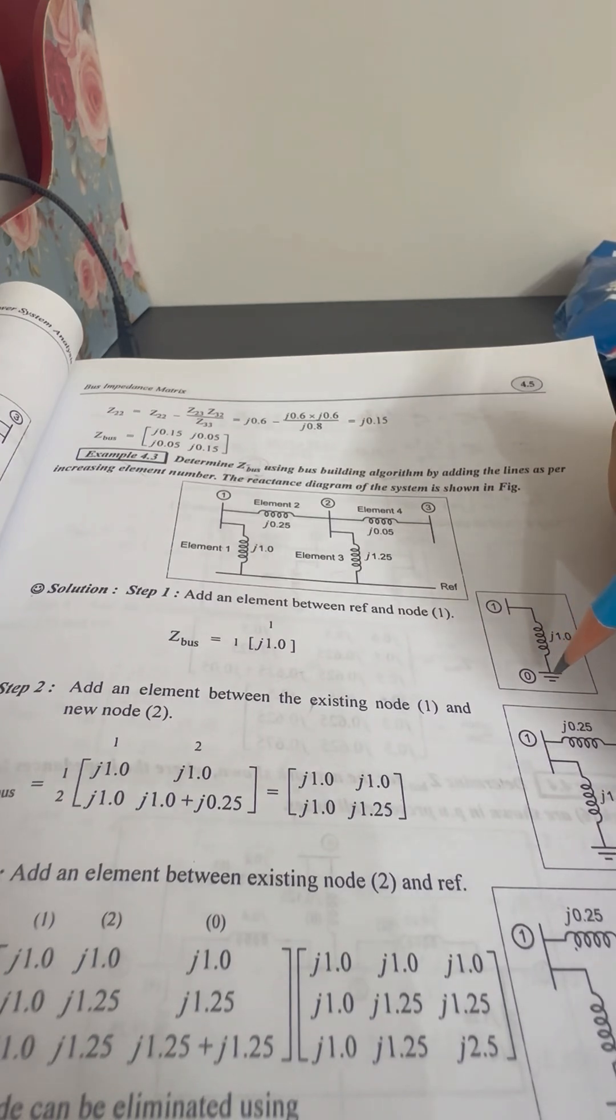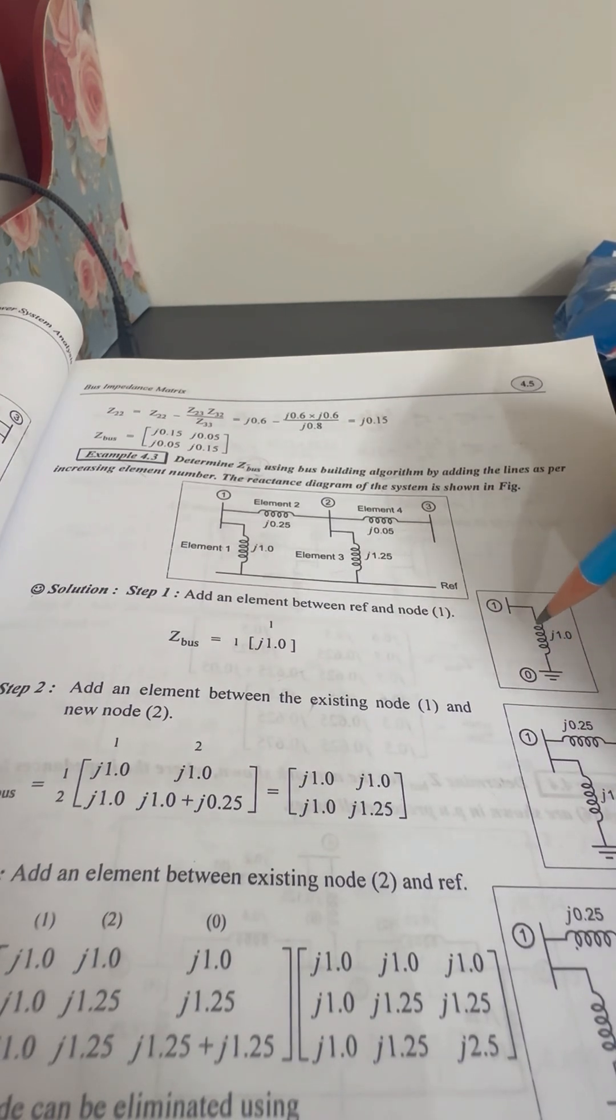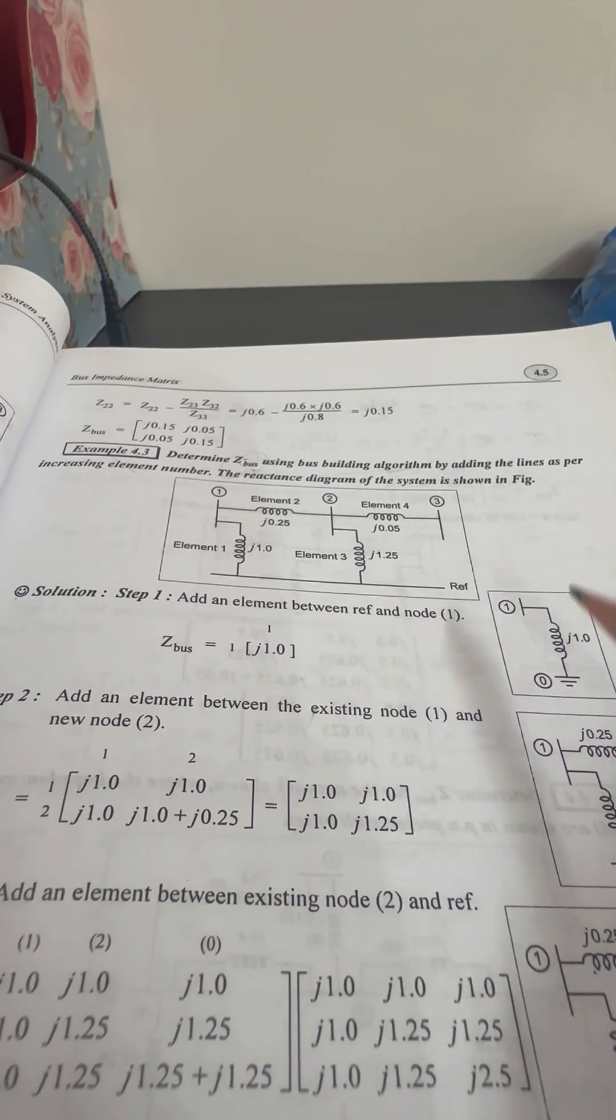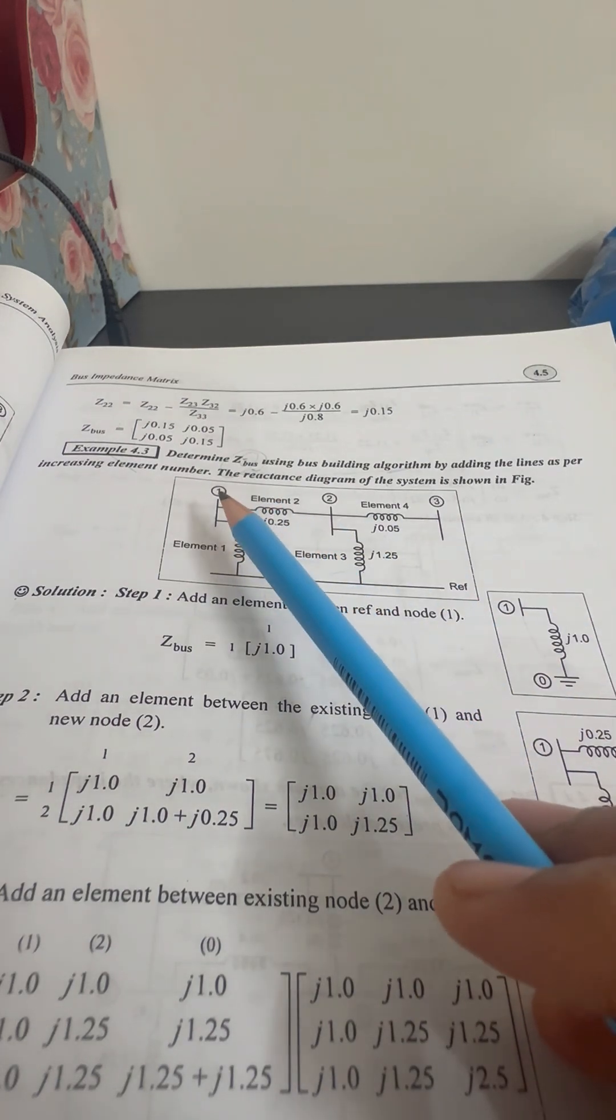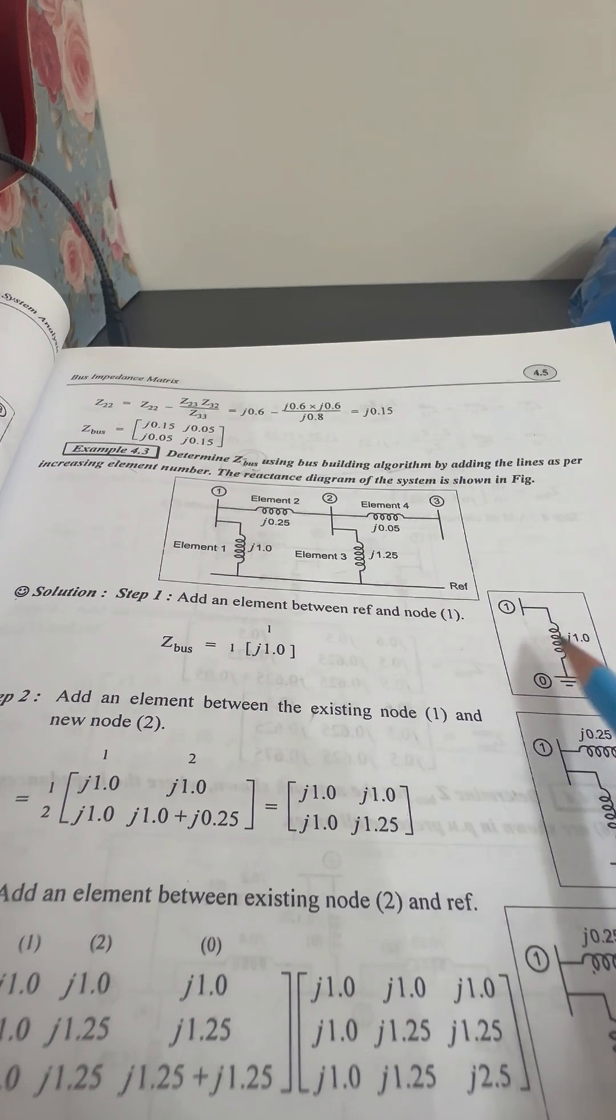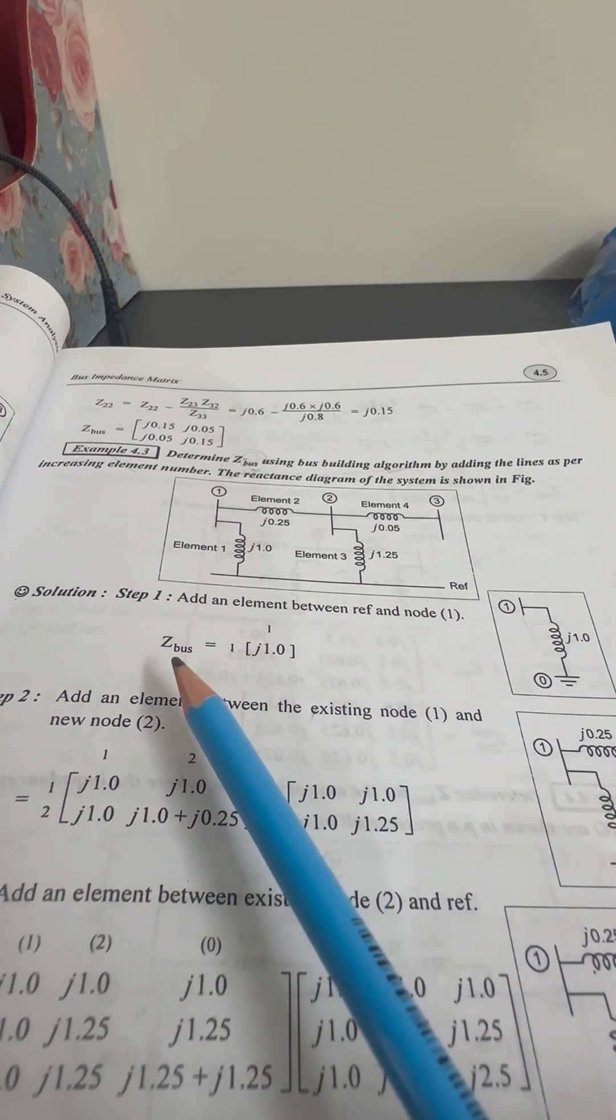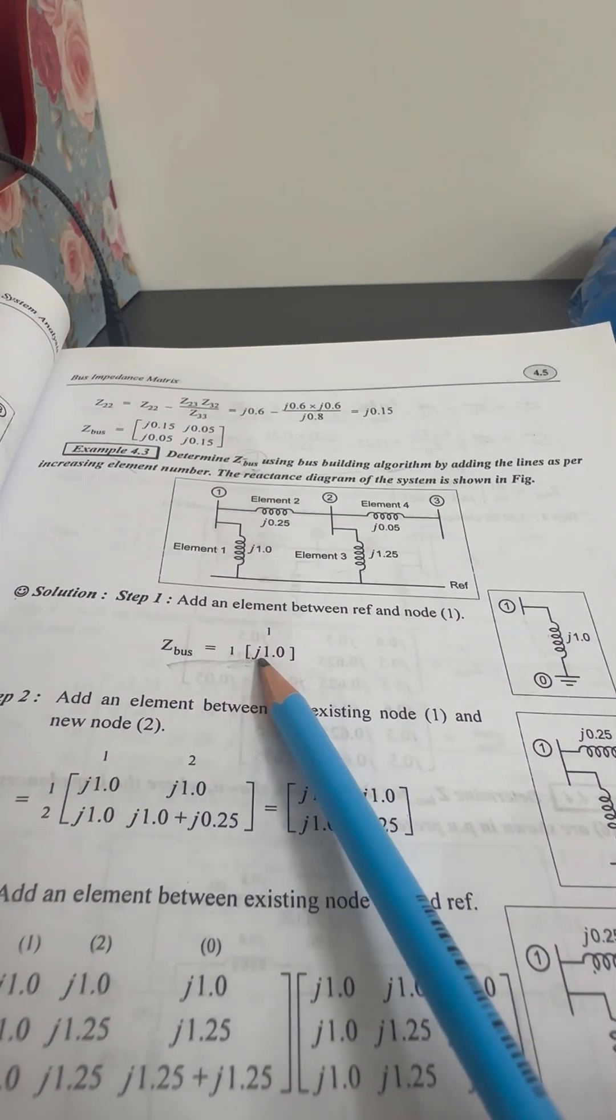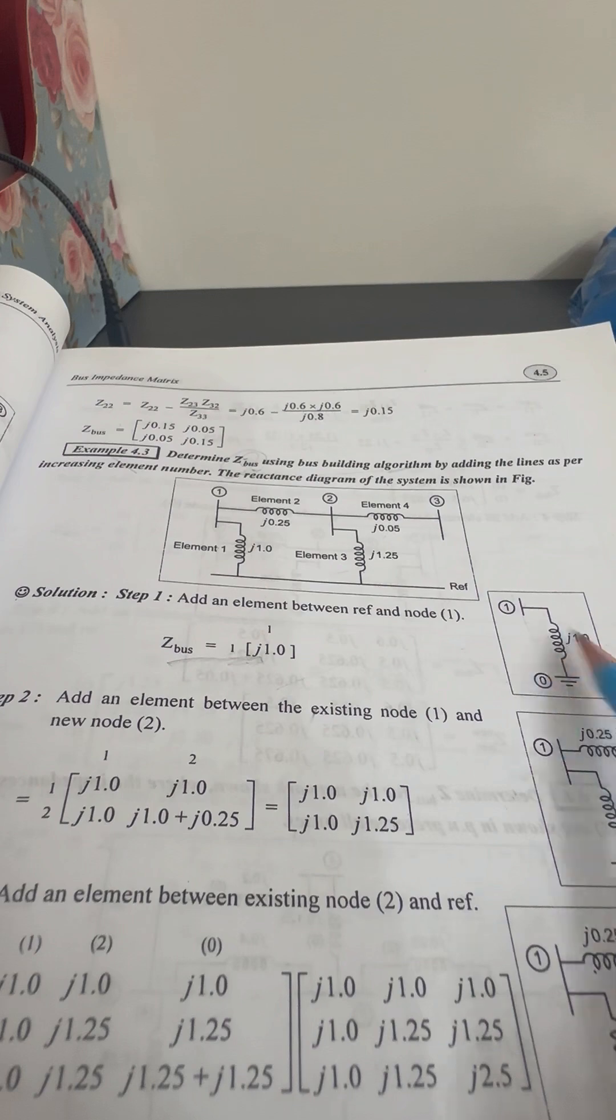From this diagram, we have the Z-Bus matrix in this diagram. Do we have the Z-Bus matrix in order? We have the Z-Bus matrix in this diagram, one cross one. The Z-Bus new matrix is equal to J1.0 in the value.